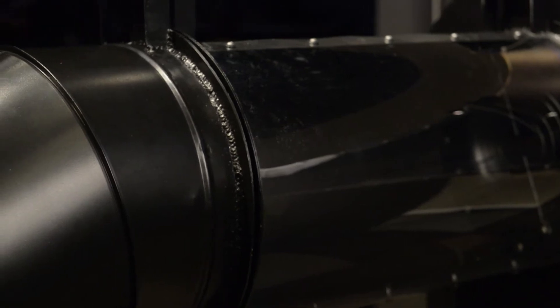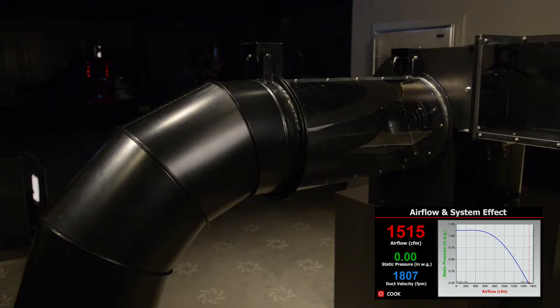Now, we'll add a long radius round elbow onto the duct. This is a SMACNA recommended detail to move air from inside a building to a roof mounted fan. With this elbow and duct, we are back to where we started as far as fan performance.